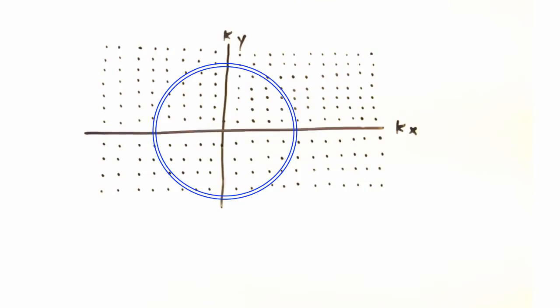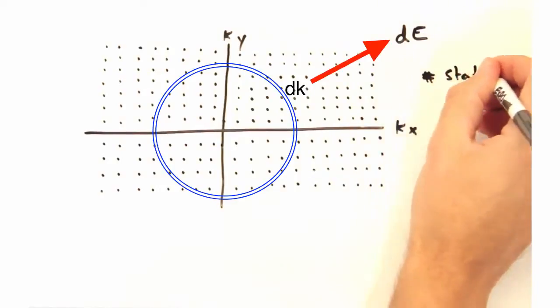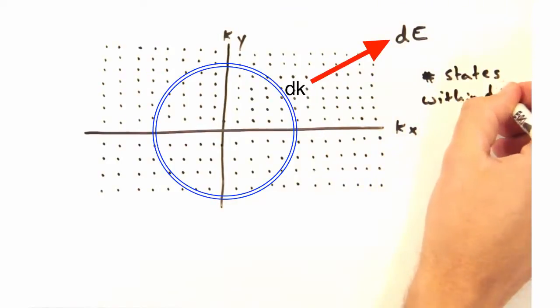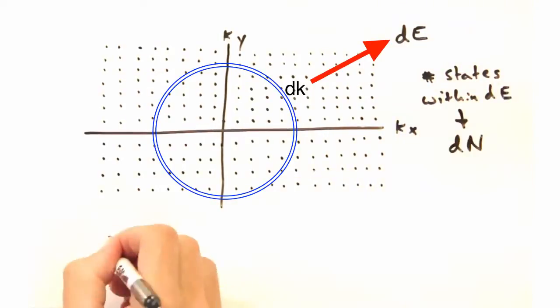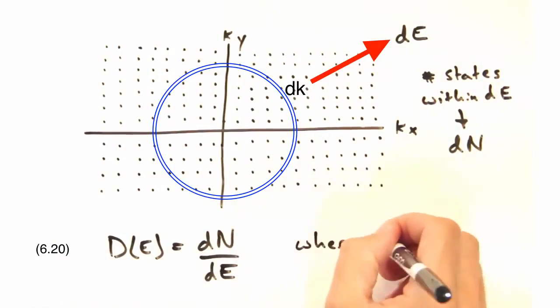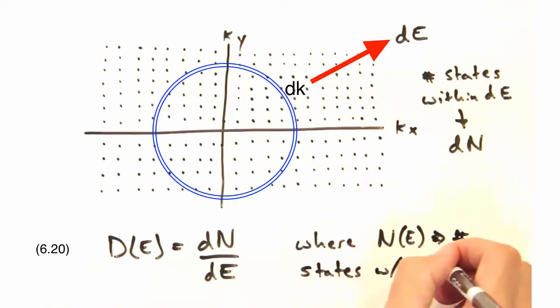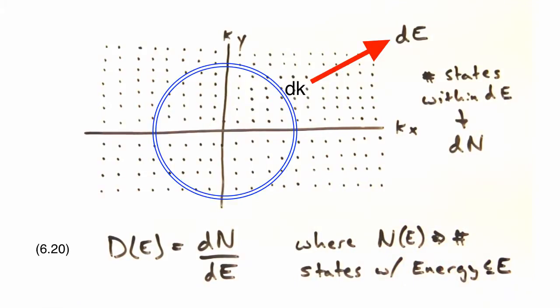Recall that we've already talked about the density of states when we talked about phonons, and can think of it as the number of states within some dE. So if we know our number of states, all we do is just take the derivative with respect to energy.